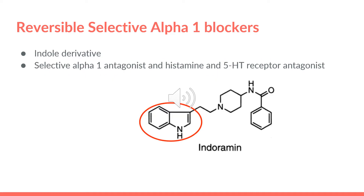In addition, we have indoramin. It's also a reversible selective alpha-1 blocker. As we can see in the red circle, this is the indole moiety, so its chemical class is indole. And it's a selective alpha-1 antagonist and histamine and 5-HT, which means serotonin, receptor antagonist.